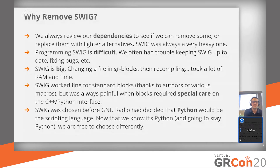We didn't do this lightly. We thought about this very carefully. Anything that's a dependency of GNU Radio is something we review regularly. We have a bunch of dependencies — we require specific compiler versions, a specific version of Boost, and other dependencies that matter. We always look at them, because dependencies are always a liability. We always want to make sure they're not dragging us down, or we can remove or replace them with something better. SWIG was one of the most invasive and problematic dependencies.